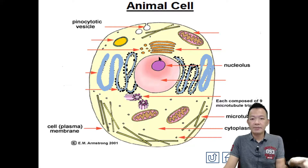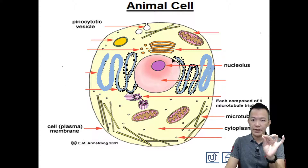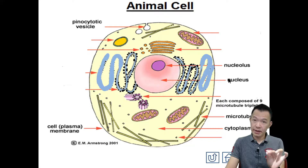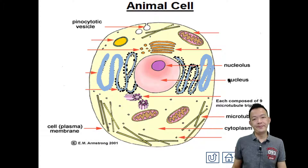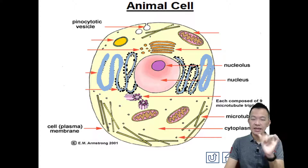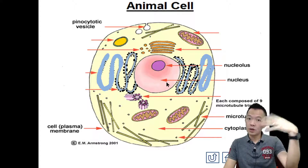The biggest organelle inside the cytoplasm would be the nucleus. 细胞浆里面最大的细胞器呢就叫nucleus. So this big, dark structure is the nucleus. Nucleus is one of the organelles and the biggest organelle inside the animal cell. We'll talk about its function later - for now just learn the name.